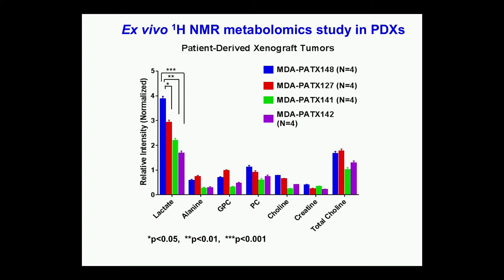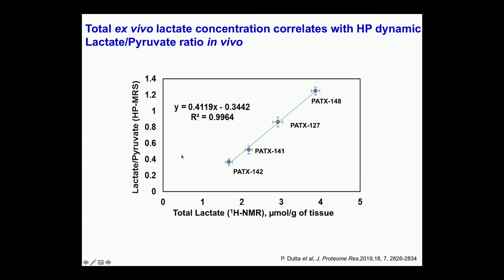We took the tumors of all four mice after the experiment, extracted them, and quantified the metabolic profile. The most aggressive tumor has the highest level of lactic acid and the least aggressive has the lowest. When you plot the total lactic acid measured from direct tumor measurement against the dynamic lactate-to-pyruvate conversion rate from real-time metabolic imaging, it is a perfect straight line. In the near future, we can probably eliminate the need to biopsy pancreatic cancer patients — just bring the patient in, inject hyperpolarized pyruvic acid in the MRI, measure the lactic acid level, and determine both total lactic acid and tumor aggressiveness.